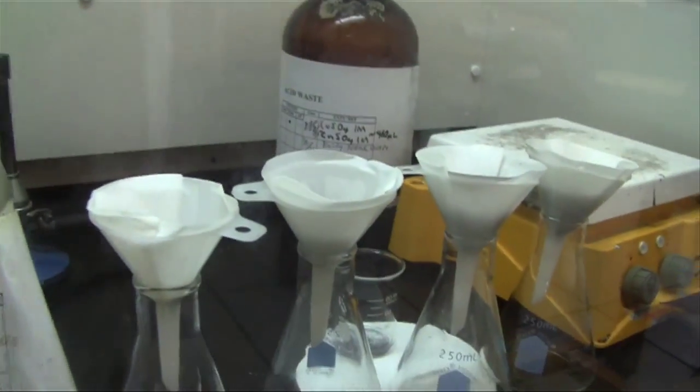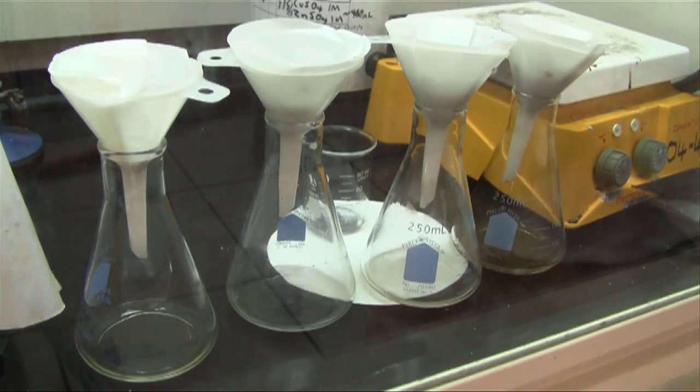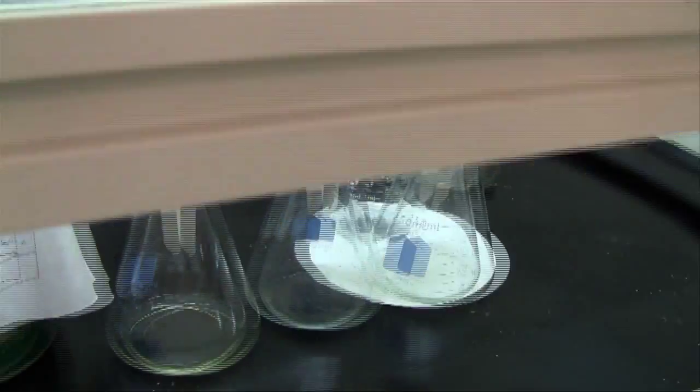We will mix each of the iron 2 chloride solutions to its corresponding concentration of iron 3 chloride. Our hypothesis is that the greater the concentration of the two iron chlorides, the stronger its magnetic strength.